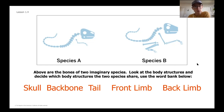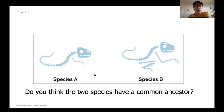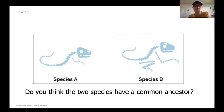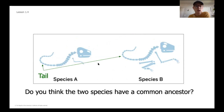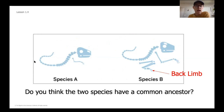As you think about these two species, what do they have in common, and would they have a common ancestor? We want to look at similar body structures. Hopefully you noticed they both have a skull, both have front limbs — limbs being a general term for arms, flippers, or legs. They also both have a backbone and a tail. The one thing Species A is missing that Species B has is its back limb.